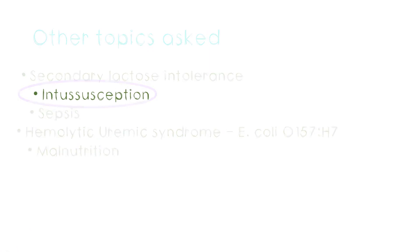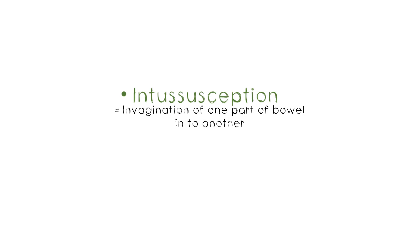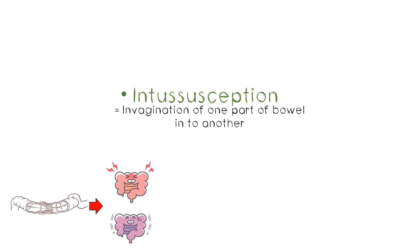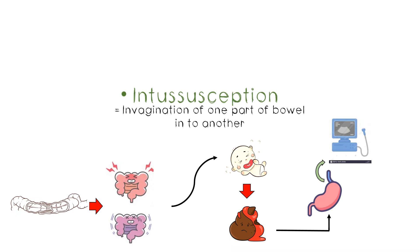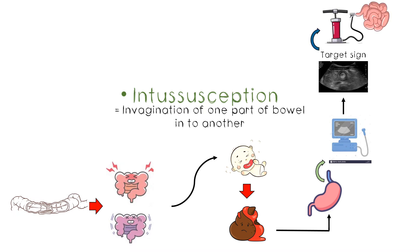Intussusception is the invagination of one part of the bowel into an adjacent part, causing bowel obstruction and necrosis. It presents with colicky pain that comes and goes — the baby cries intermittently with arms and legs scrunched up, then returns to normal within a minute. Red currant jelly stools are a late but specific feature. On examination you may find a sausage-shaped mass in the abdomen. Ultrasound confirms it with a typical 'target sign.' Treatment is by air insufflation through the anus, which pushes the invaginated part back to normal position using air pressure. If unsuccessful, surgery may be needed.